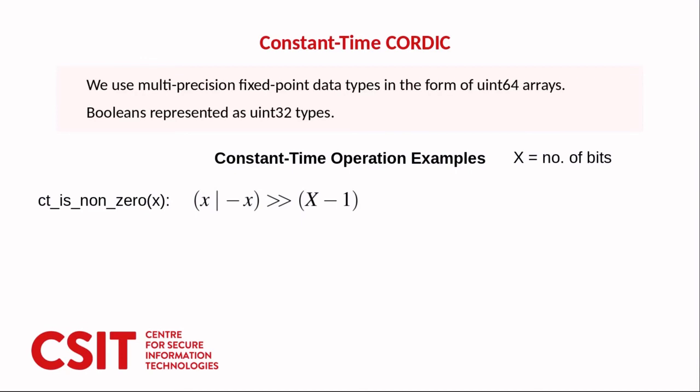To secure the CORDIC algorithm we use multi-precision fixed point data types in the form of unsigned 64-bit integer arrays. And we represent booleans as uint32 types where the least significant bit is either a 0 or a 1. We make good use of some widely known cryptographic operations, so operations which carry out otherwise non-constant time operations in constant time.